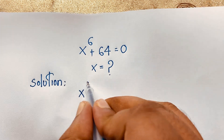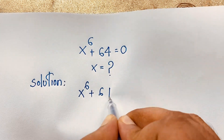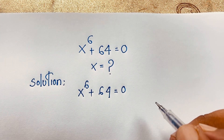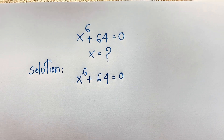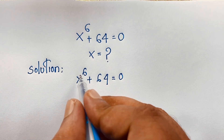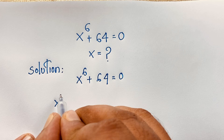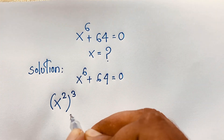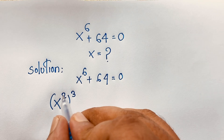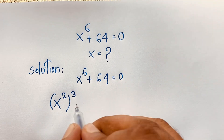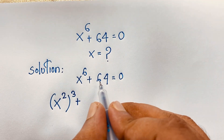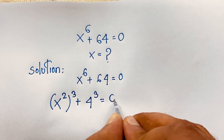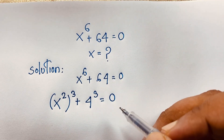Our question is x to the power 6 plus 64 is equal to 0. At this moment, you can see that it will be x to the power 2, bracket to the power 3, using the exponential formula: 2 times 3 is 6. Plus this 64, it will be 4 to the power 3, is equal to 0. Note that 4 to the power 3 is 64.